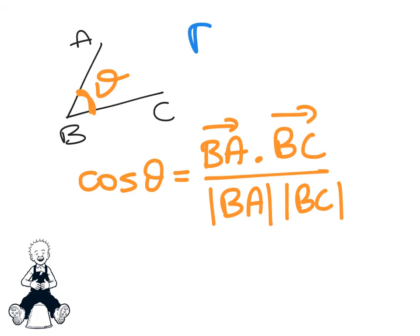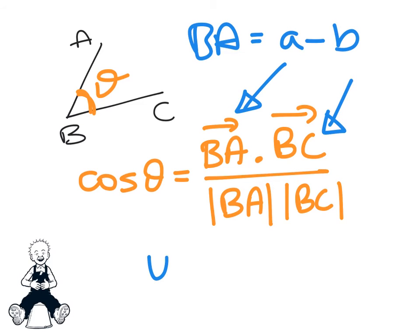You know how to work out BA. BA is little a minus little b, so get that for there. Similarly, get an answer for BC. Stick them all in the formula, work out what the angle is.